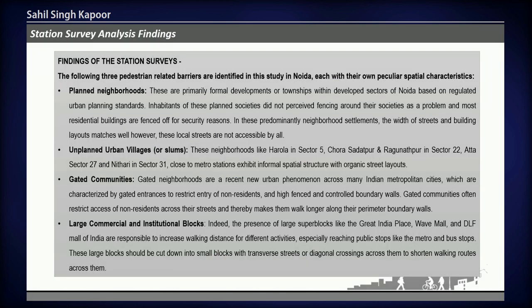Following my survey conducted across 12 elevated metro stations in Noida, I have been able to identify four types of pedestrian barriers. These are typical pedestrian barriers which either increase pedestrian walking distance beyond the perceived shortest route or impede people from walking to the nearest metro station.